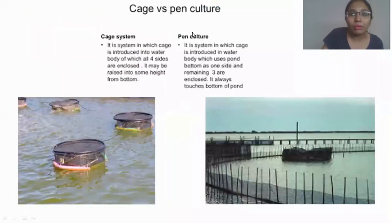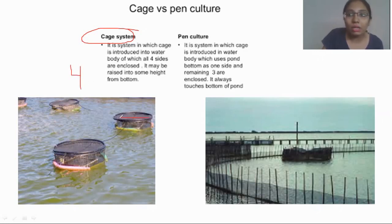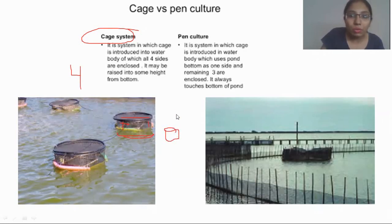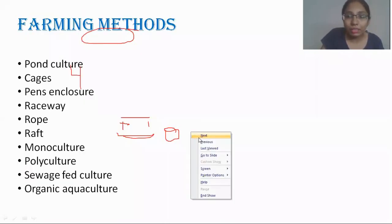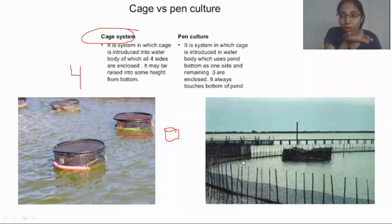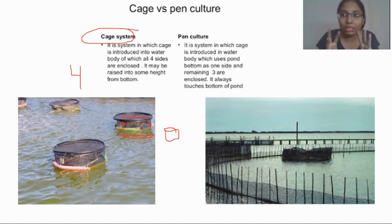In a similar way, we have pen culture. It is very similar to the cage system, but there is a key difference. In the cage system, all four sides are locked — including the bottom. But in pen culture, only three sides are locked; the bottom is not locked — the natural bottom is used. So if the net or cage is closed on only three sides, it will be classified as pen culture.